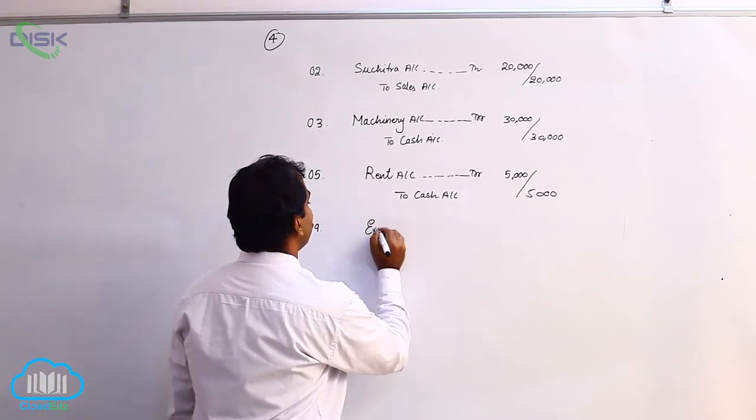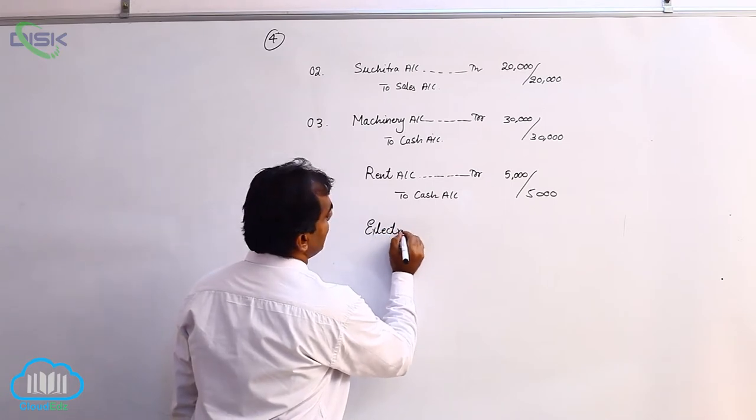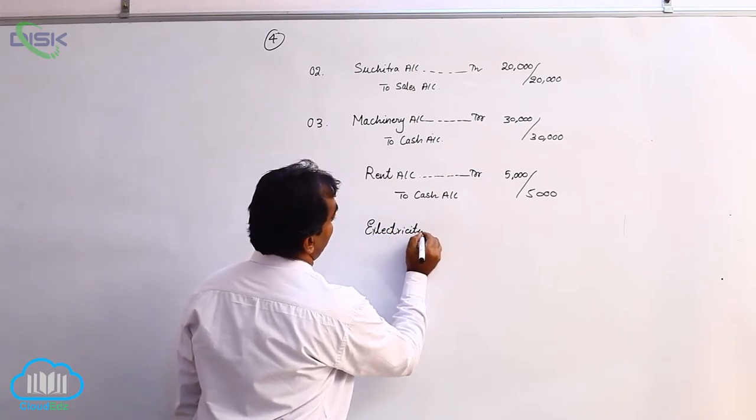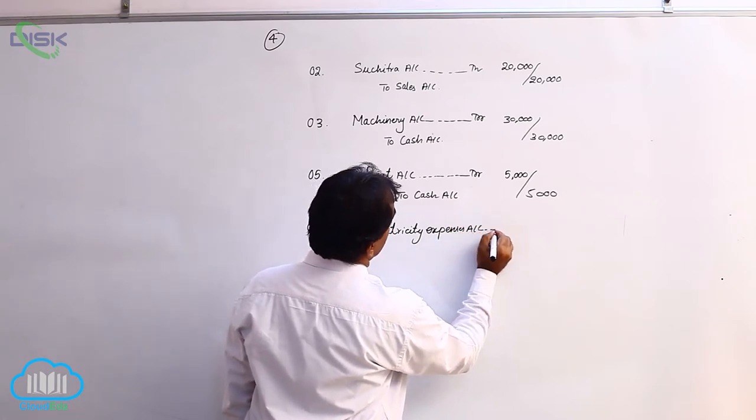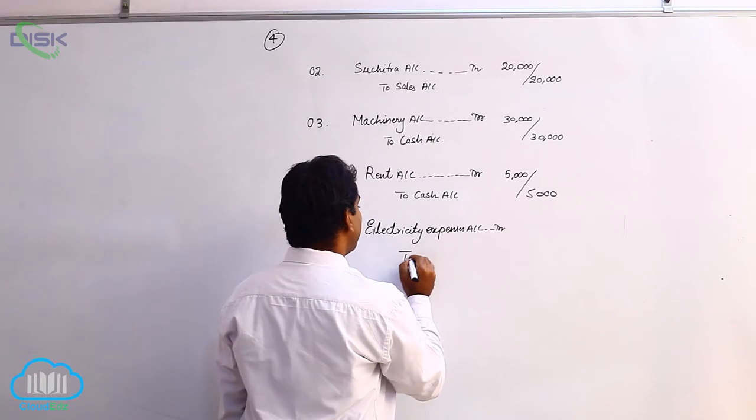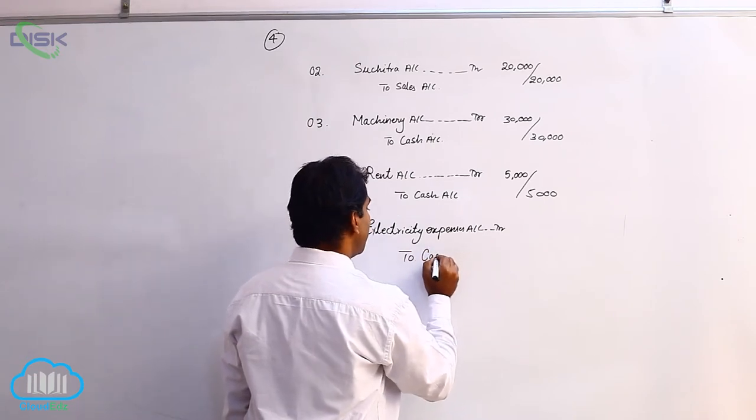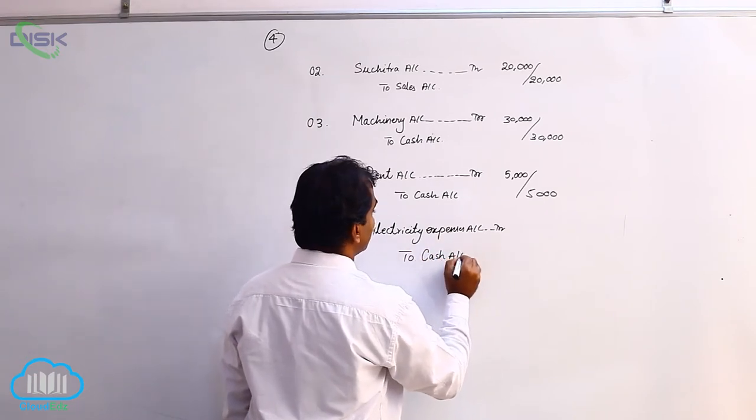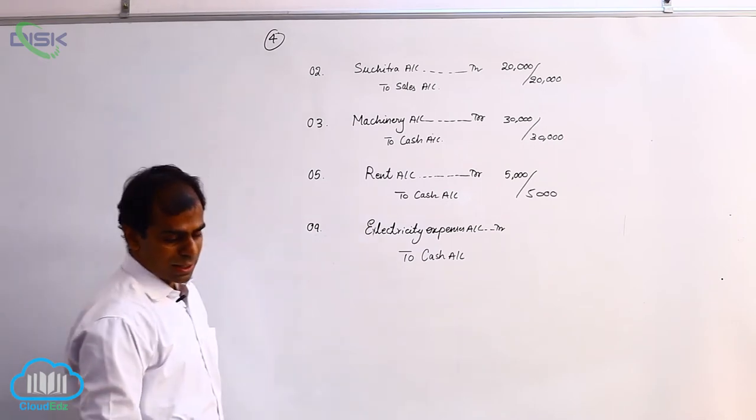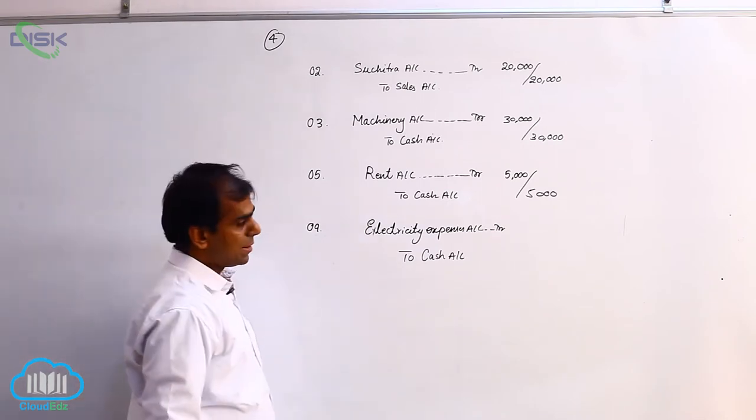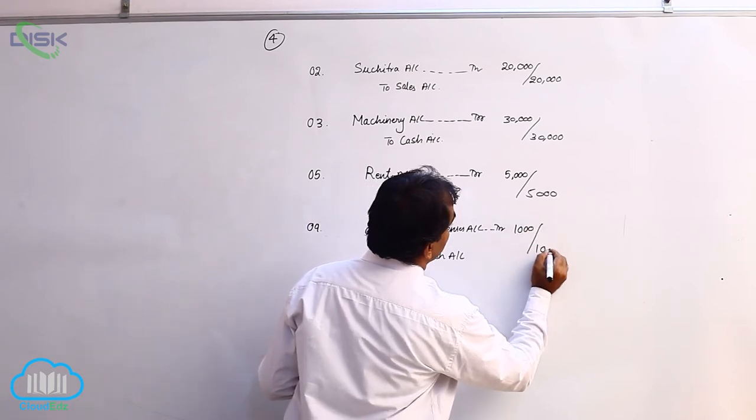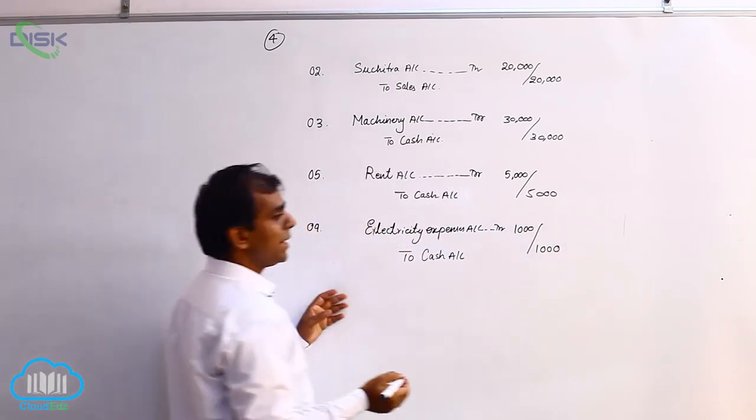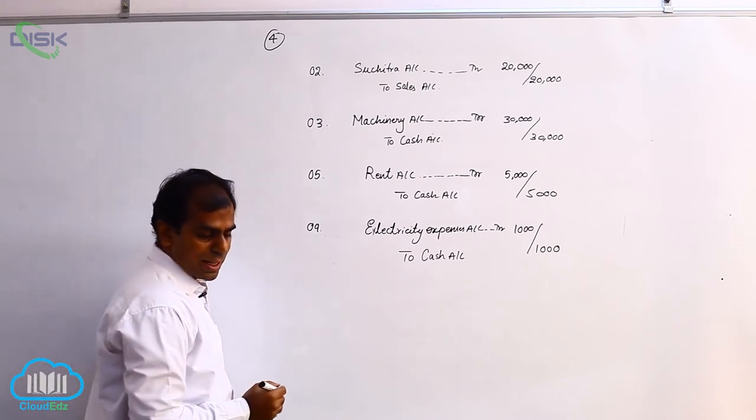Therefore, we say electricity expenses account debit. We are paying means cash is going out. Being real account, we will credit it because it is going out. So, your entry, electricity expenses to cash, 1,000. Being electricity bill paid could be your narration.